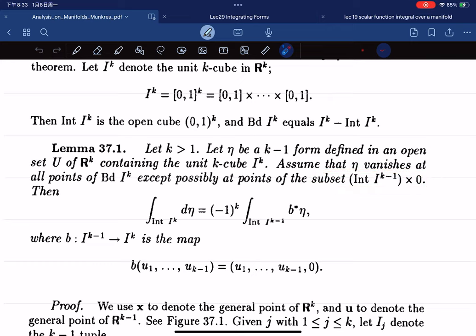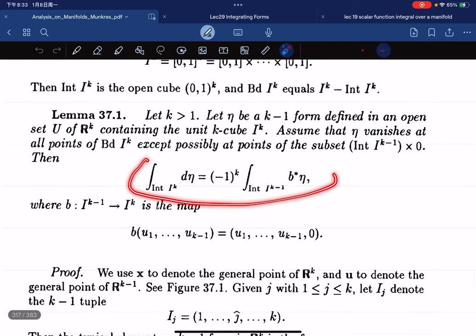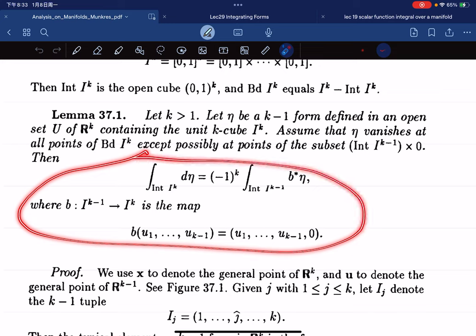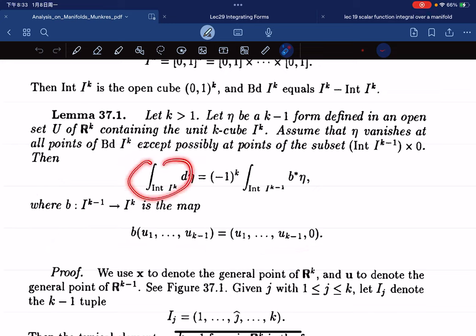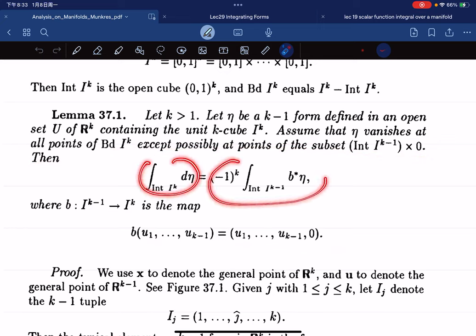This is like the bottom face. Then we have this equality where b is this map. We just verify both sides and use the given conditions. We calculate both sides and then see they are equal to each other. We don't try to compare them, we just calculate them directly.